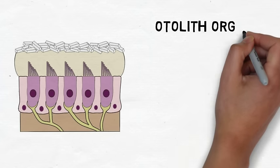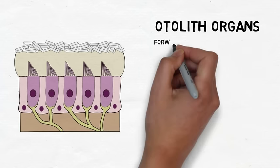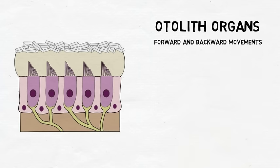The vestibular system uses two other organs, known as the otolith organs, to detect forward and backward movements and gravitational forces.